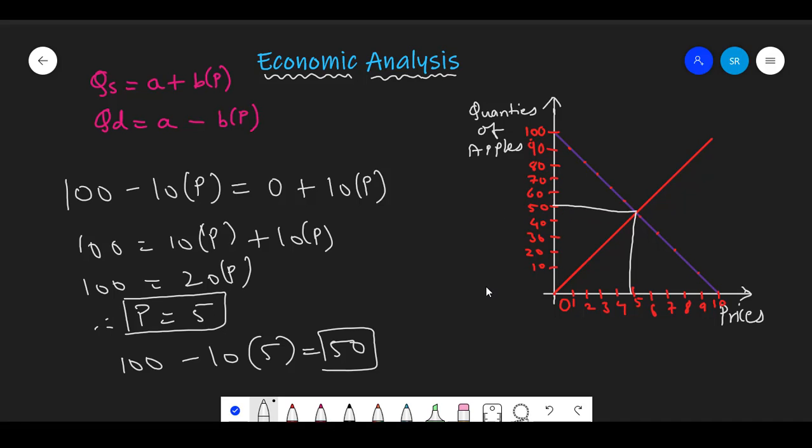Hence we can conclude that at the equilibrium, price is equal to 5 and quantity is equal to 50. This means that as the apple vendor, if you try to sell your commodities at rupees 5 and get only 50 quantities to sell on a particular day, then all your apple quantities will be sold and the market would clear off.